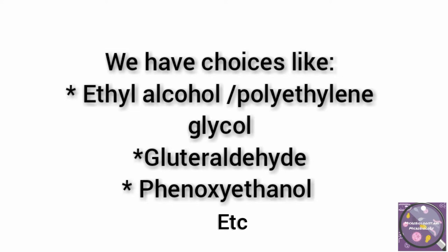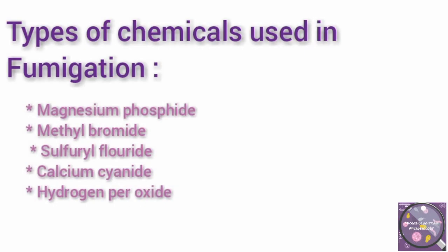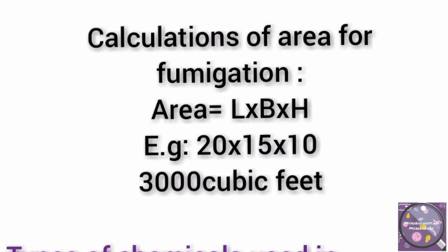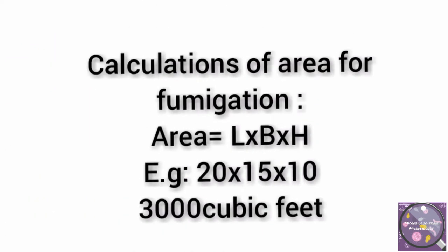These alternatives may also pose worker health and safety concerns. Types of chemicals used in fumigation include magnesium phosphide, methyl bromide, sulfuryl fluoride, calcium cyanide, and hydrogen peroxide. The most widely used sporocides are chlorine, as in hypochlorite solutions or bleach. We can use these chemicals after validation on our respective areas and as per validated calculations. Here is an example of calculations of area for fumigation.